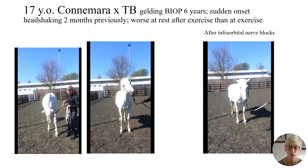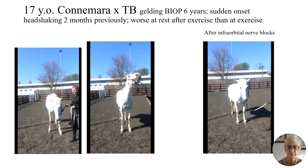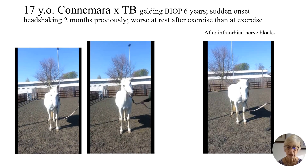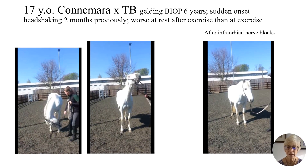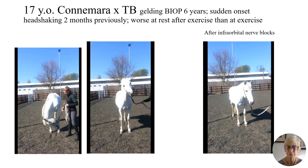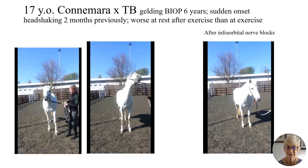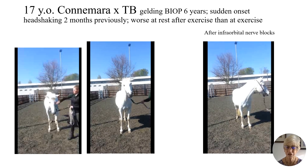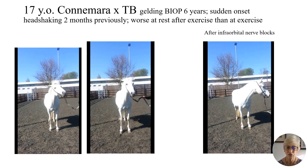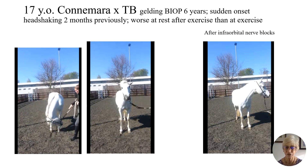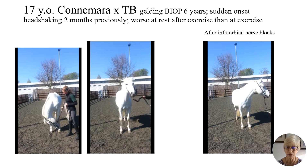Sometimes affected animals will strike out with a forelimb at the nose, and they will often make an abnormal respiratory noise during exercise. On the right we see the same pony after infraorbital nerve blocks, and we can see that the pony is standing normally, interested in its surroundings, ears forward, with no head shaking and no tendency to strike the forelimbs or rub the nose.